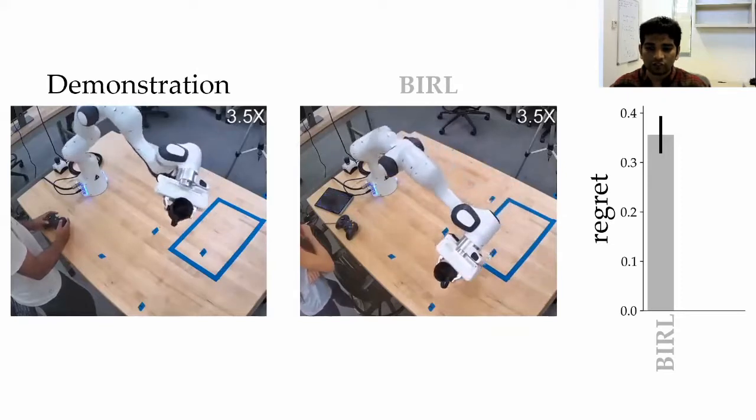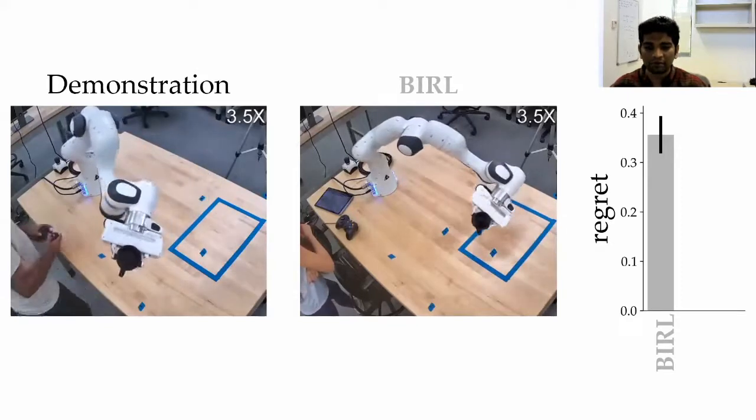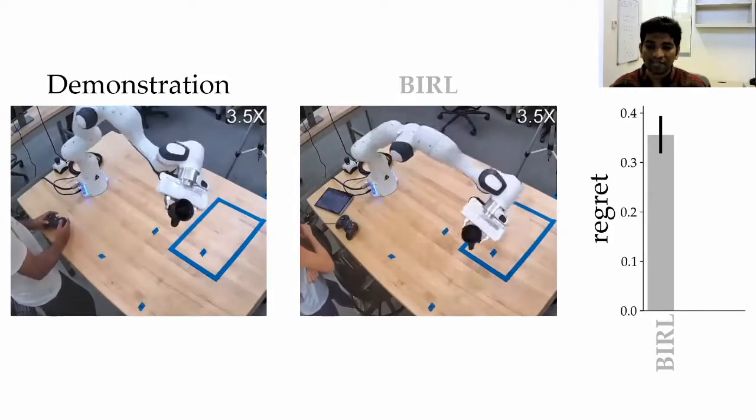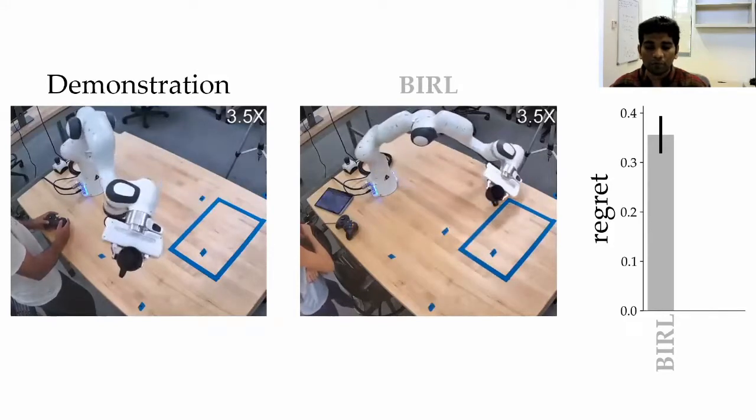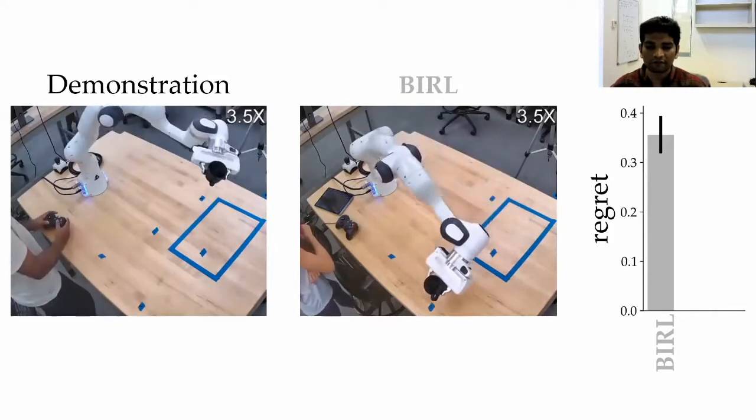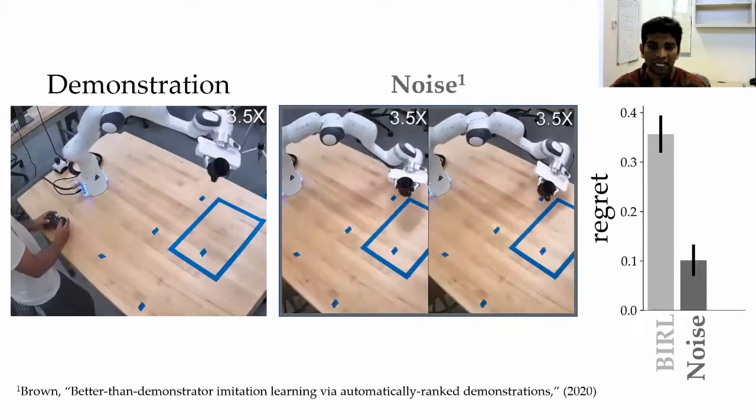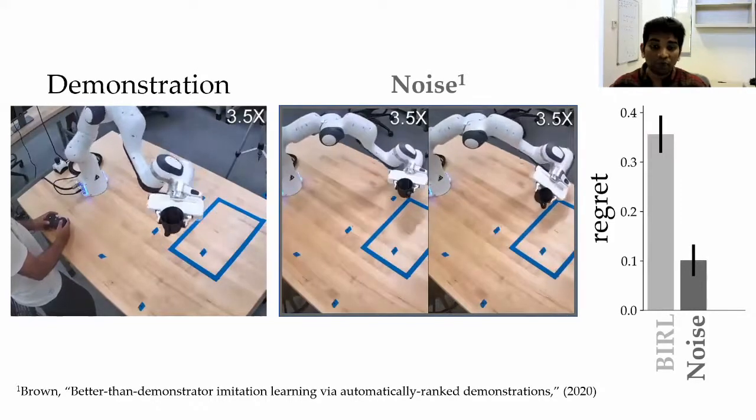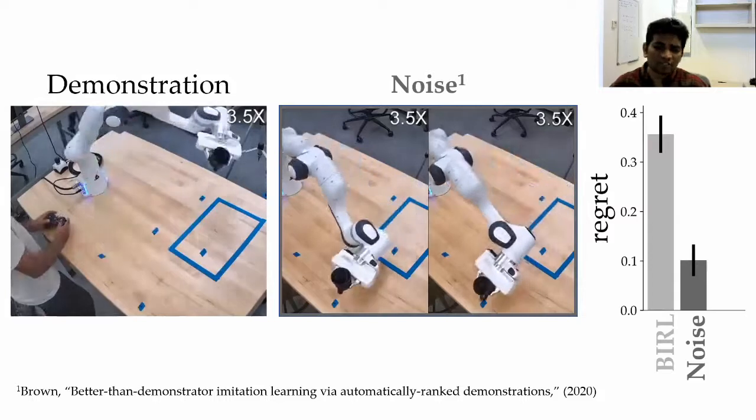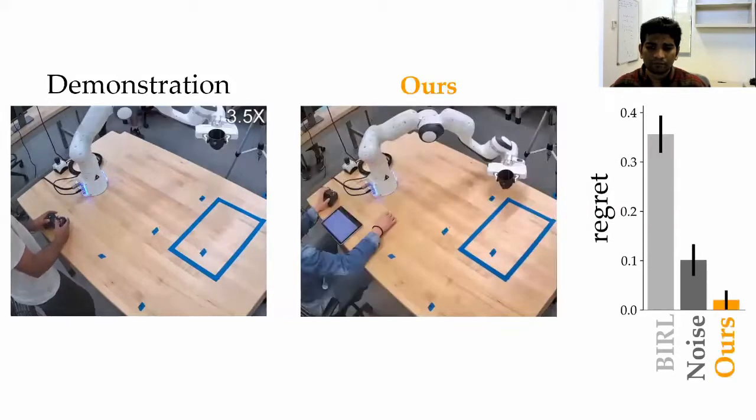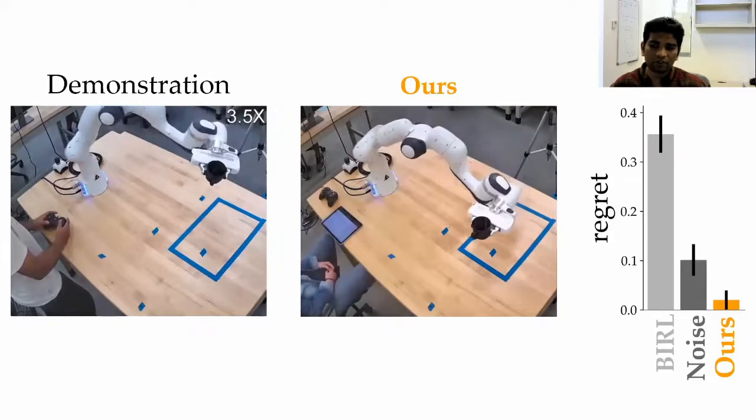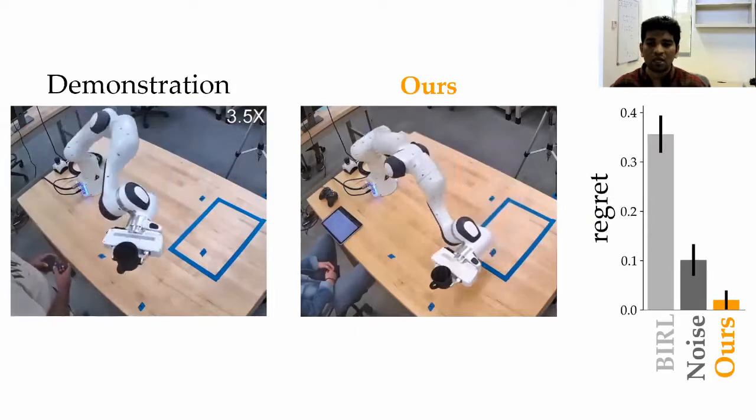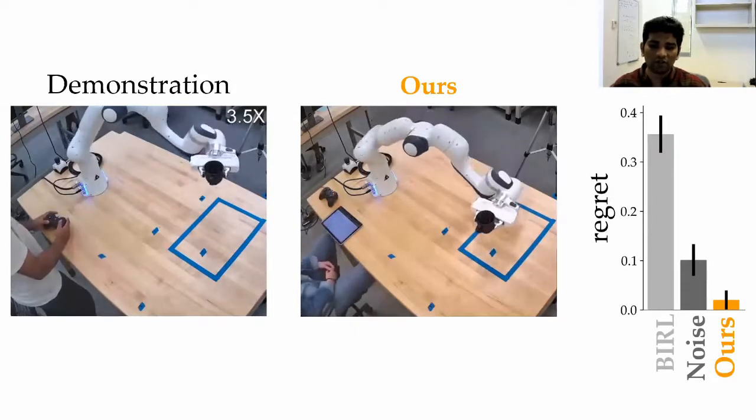In the middle, you can see what the robot learned, and on the right, we plot regret, which captures how much worse the learned behavior is compared to the desired behavior. Here, the robot learns with Bayesian inverse reinforcement learning, a baseline that ignores humans' limitations. This robot learns to match the human's demonstrations and spills coffee. Next, we learned from the human's demonstrations by comparing them only to similar alternatives produced by noisy perturbations. This robot was uncertain about what the human wanted. Finally, comparing the user demonstrations to both similar and simple alternatives helps the robot extrapolate the human's objective. This robot minimizes the average regret across all users.